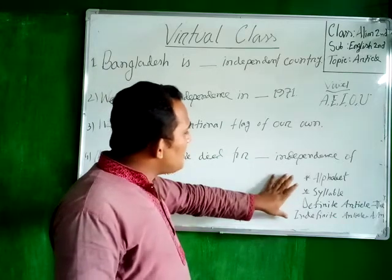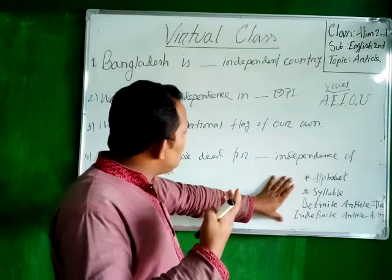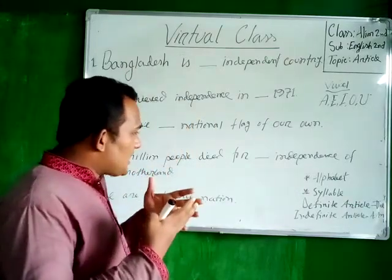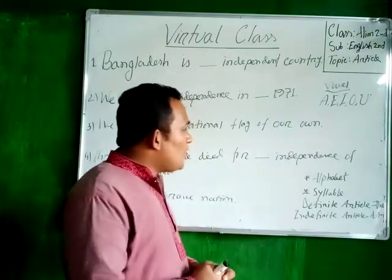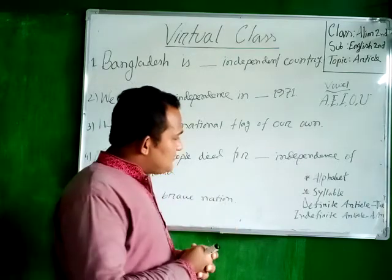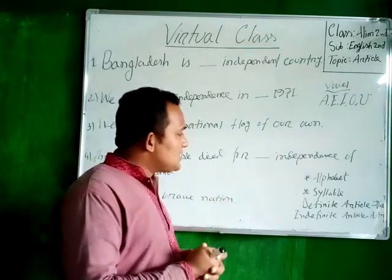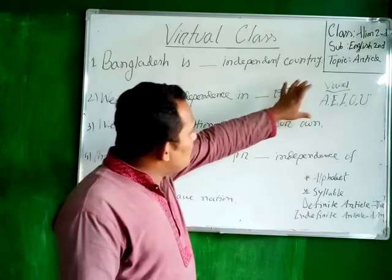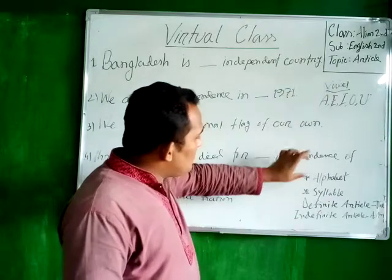In terms of using articles, we have to remember one thing — that is syllable. What is a syllable? A syllable is a group of letters that has a vowel sound. So we have now learned what a vowel is and what a syllable is.